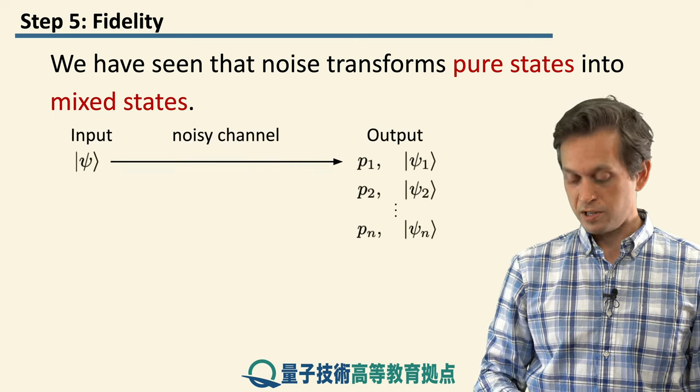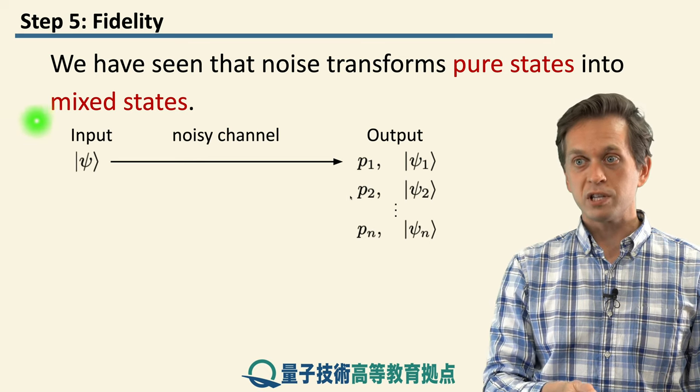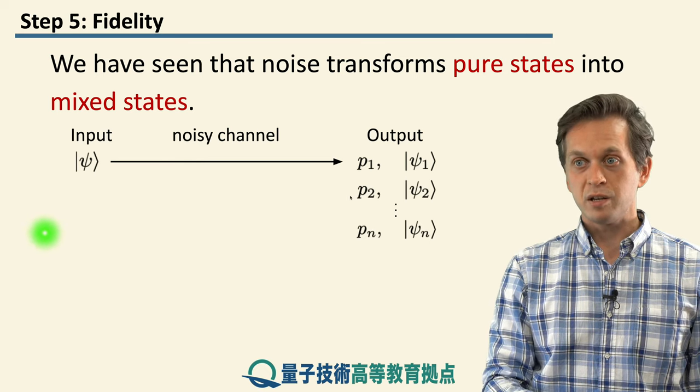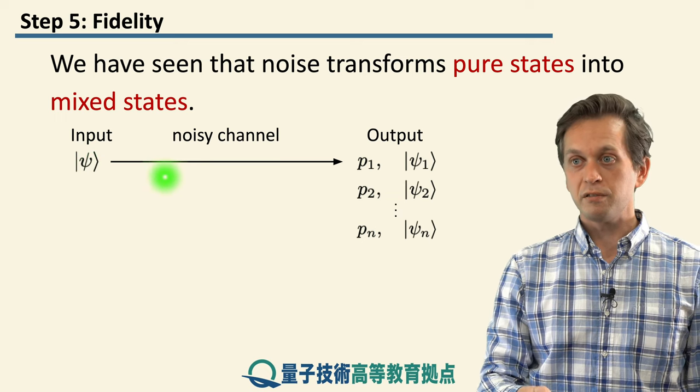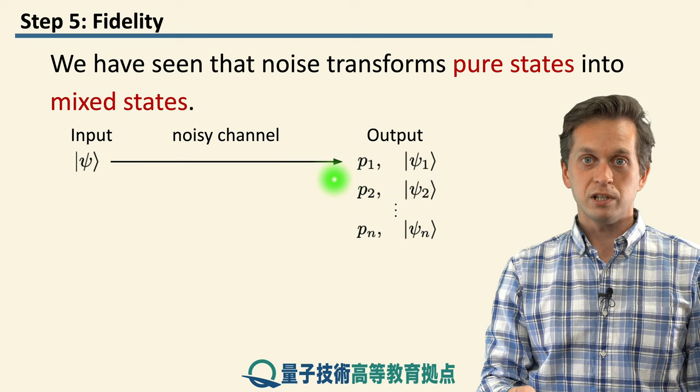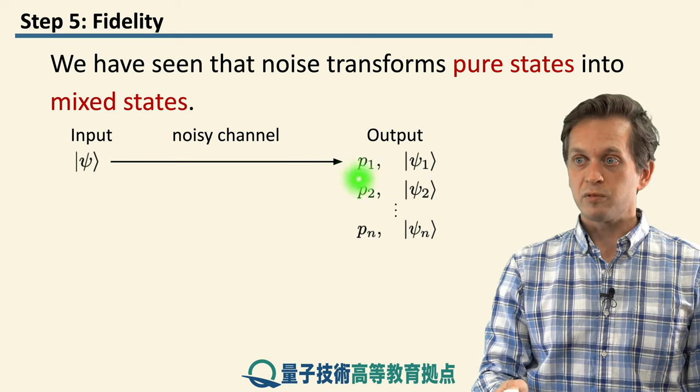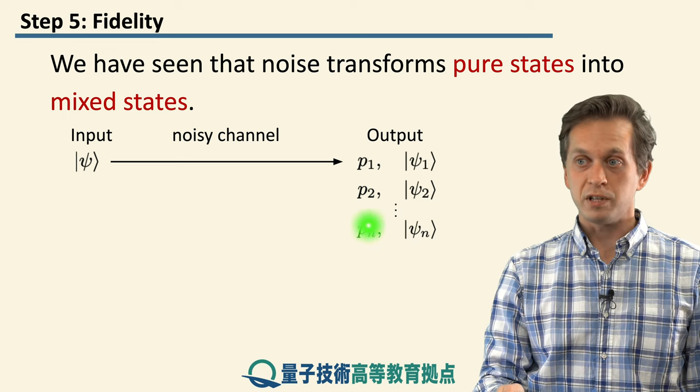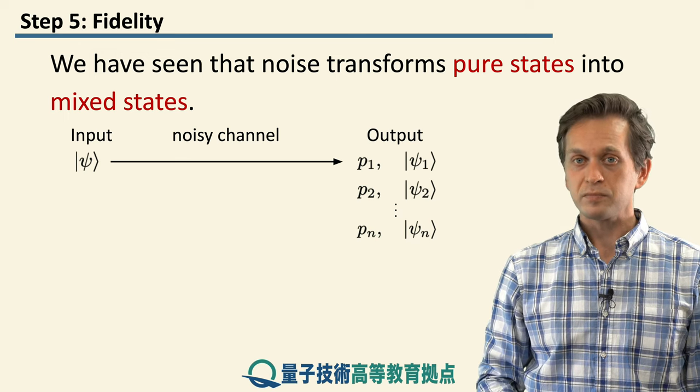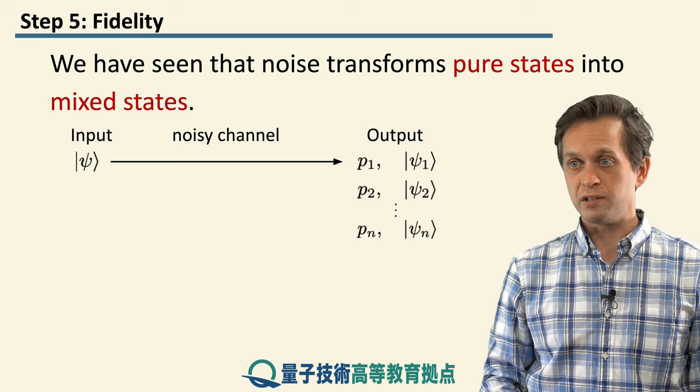Just to remind you of the scenarios, particularly in communication, you begin with some input state psi, a pure state that you would like to use in your protocol, and send it through a noisy channel. Usually the output at the other end is with some probability you have state psi 1, with another probability state psi 2, and so on. So you get a distribution of states.